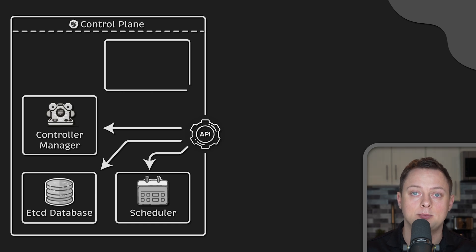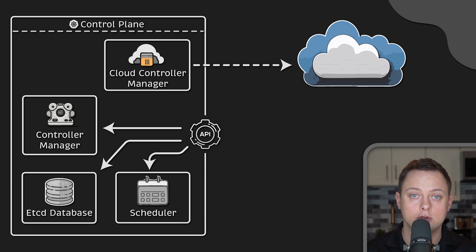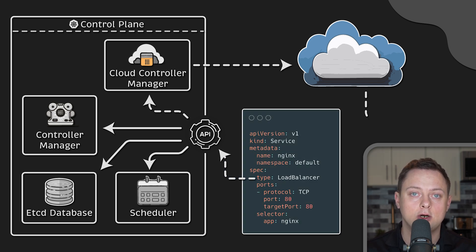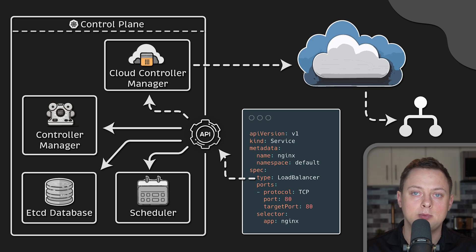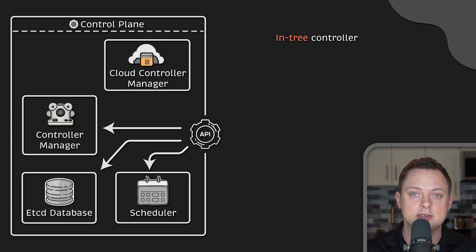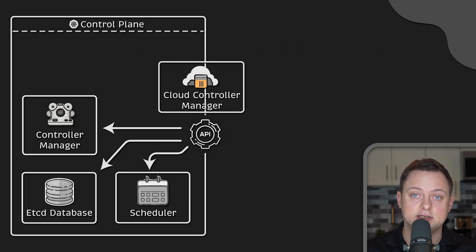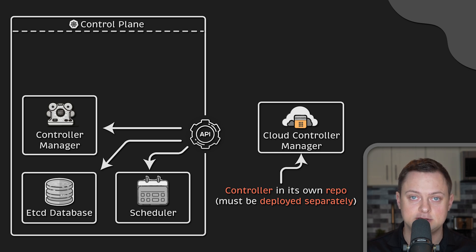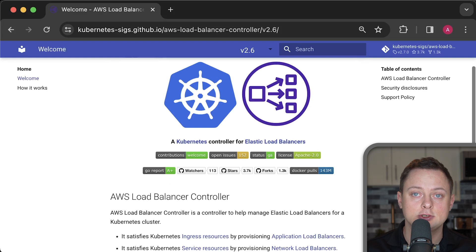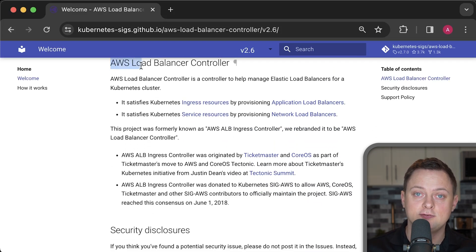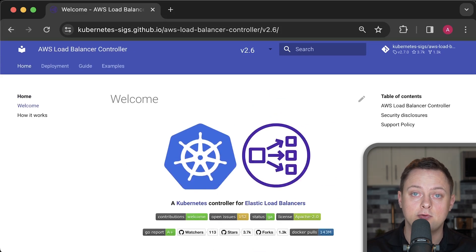Finally, we have the Cloud Controller Manager, a component that embeds cloud-specific control logic. For example, if you host your Kubernetes cluster in AWS, when you create a service object of type load balancer, the controller will make the necessary API calls to AWS and create an AWS Elastic Load Balancer. Other controllers may be responsible for allocating EBS cloud volumes and attaching them to Kubernetes nodes. This controller integrates Kubernetes with cloud services, and most of the time these controllers are developed by the cloud providers themselves. However, there is a trend to decouple Kubernetes from cloud-specific logic — for example, AWS created the AWS Load Balancer Controller, which you deploy additionally to the cluster. It allows cloud vendors to develop and integrate new features quickly without waiting for the next Kubernetes release.